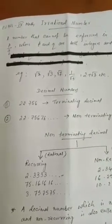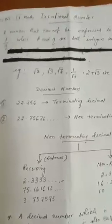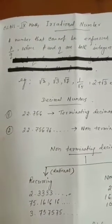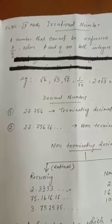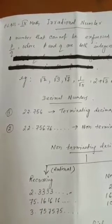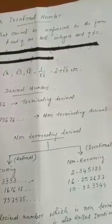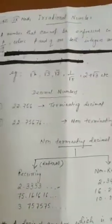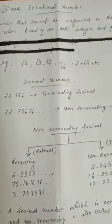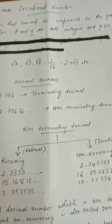This class I will teach you irrational numbers. An irrational number is a number that cannot be expressed in the form p/q, where p and q are both integers and q is not equal to 0.